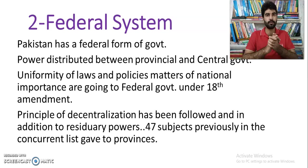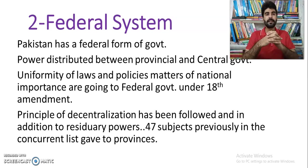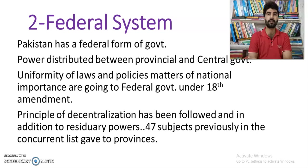The principle of decentralization has been followed, and in addition to residuary powers, 47 subjects previously in the concurrent list were transferred. Residuary powers mean the federal government can delegate power on some subjects to the provinces. The concurrent list subjects — which provinces could debate, decide and legislate on — were devolved to provinces after 18 months, referencing the 18th Amendment.